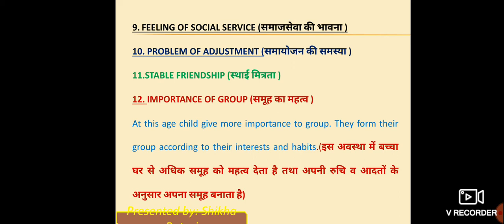Next is stable friendship. In the adolescence stage, friendships become important. They have loved ones — friends they are close to. The importance of the group is significant at this stage, and they prefer spending time together in a group.